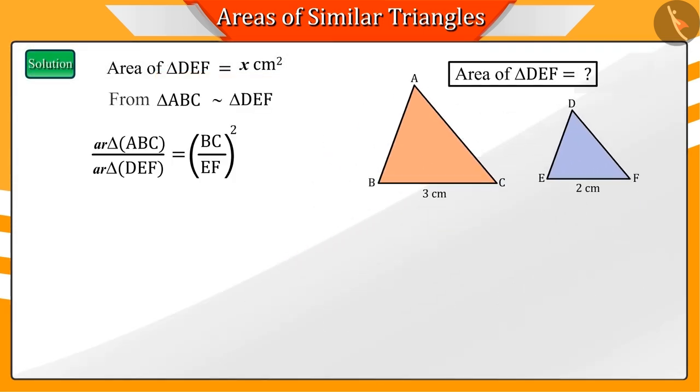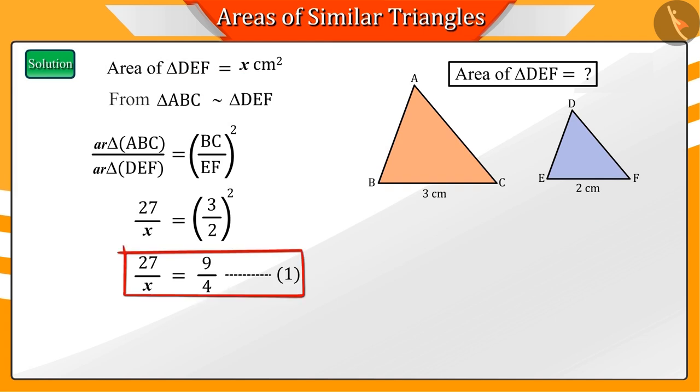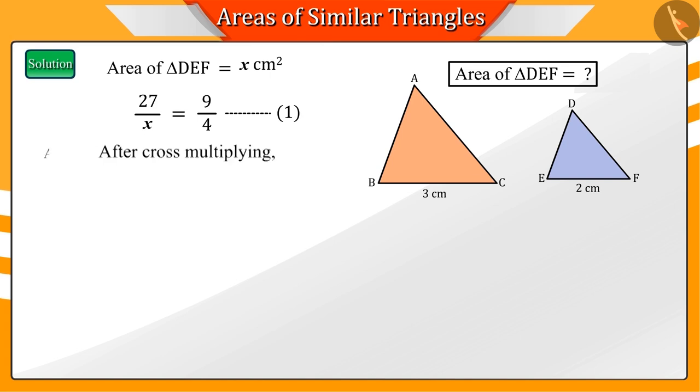Using this theorem, we get equation 1. Can you tell how do we get the value of x from equation 1? Good. By cross-multiplying equation 1, we get the value of x as 12 square centimeters.